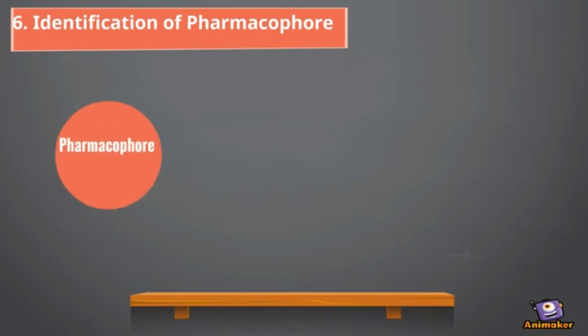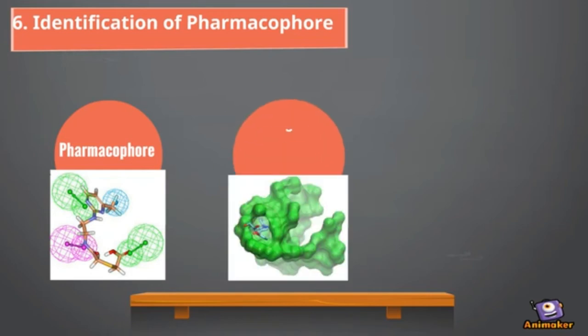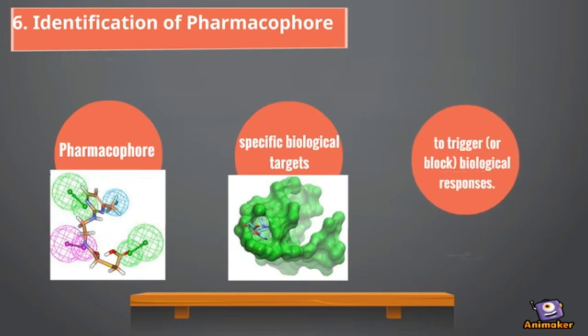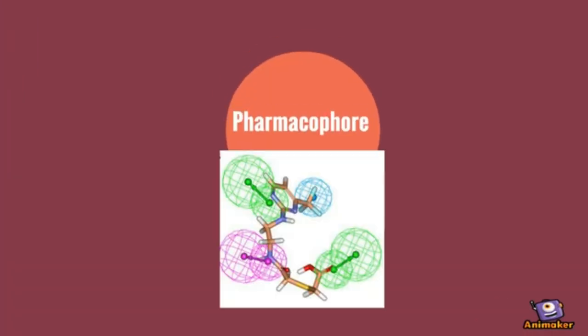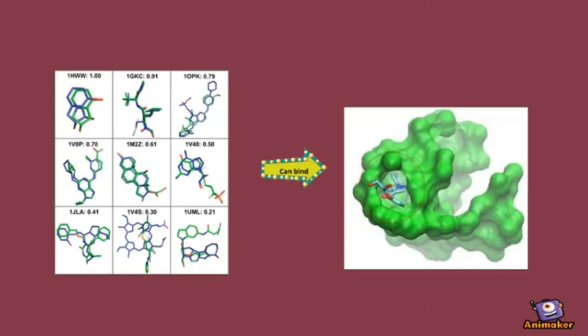A pharmacophore is a set of steric and electronic features necessary to ensure optimal supramolecular interactions with specific biological targets and to trigger or block biological responses. The pharmacophore model explains how multiple structural ligands can bind to common receptor sites.